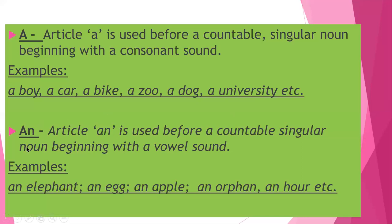Now I'll explain the article 'an'. Article 'an' is used before a countable singular noun. 'A' is also used before a countable singular noun, but the difference between 'a' and 'an' is that 'a' is used before a consonant sound, but 'an' is used before a vowel sound. Again, we need to follow the sound, not the letter. For example: an elephant, an egg, an apple, an orphan, an hour. Elephant — the sound is A, so it's a vowel sound, and even the letter is also a vowel.